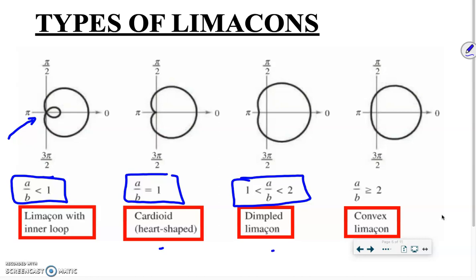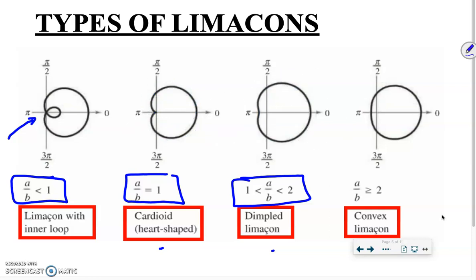The cardioid distinctly goes in and comes back out; the dimpled version doesn't have as pronounced an indent, but they can look similar. That's why it's very beneficial to know what type you have going in. The last type is convex — it does not cave inward at all — and that occurs when a/b is greater than or equal to 2. Knowing the type beforehand will help you draw the correct shape.